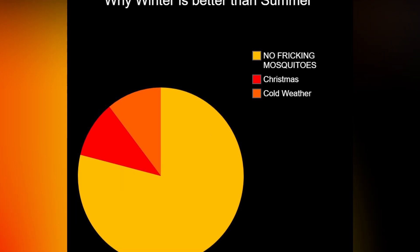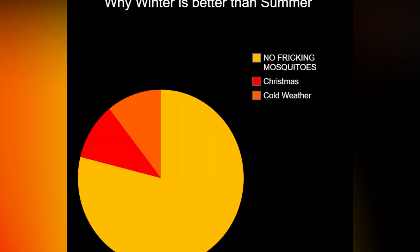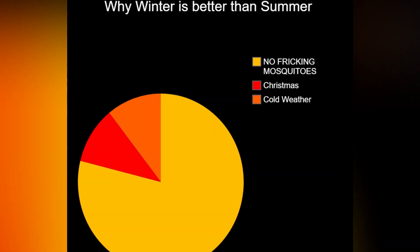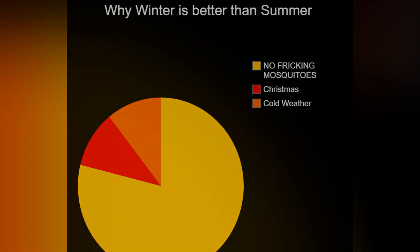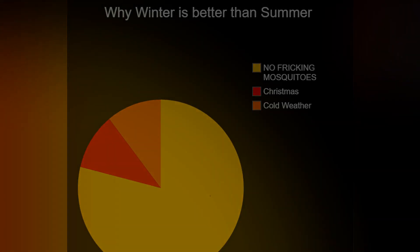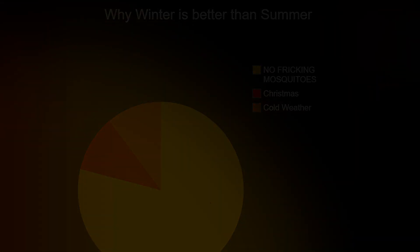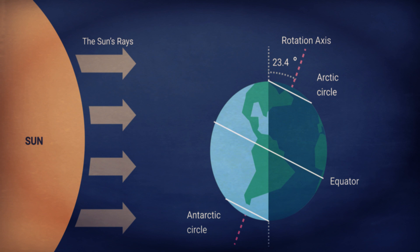So thanks to earth's tilt, we see solstices. As you already know, a solstice is a natural event during which one of the hemispheres is at its maximum tilt away from or towards the sun. There are two types of solstices: winter and summer, or June solstice and December solstice.